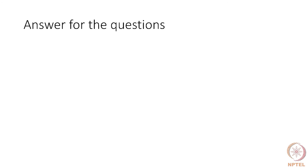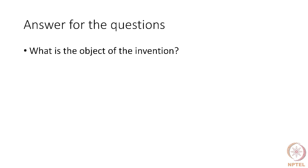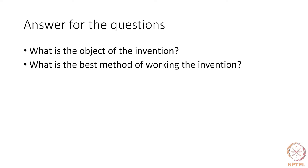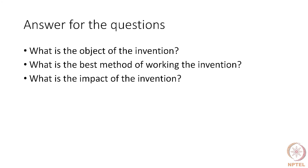During the search, you are looking for answers to certain questions: what is the object of the invention, what is the best method of working the invention, and what is the impact of the invention. Once you understand this, it is easier to do the search because most likely an existing patent would claim the best method of its working, and would describe its object and the impact too.